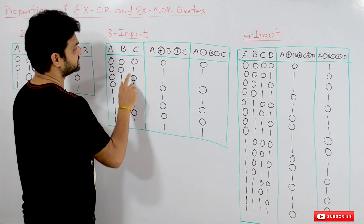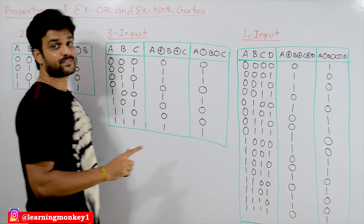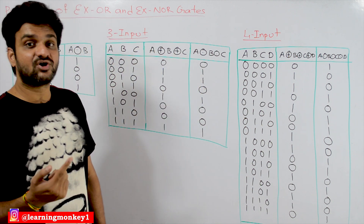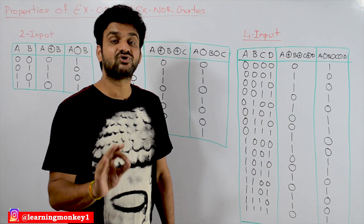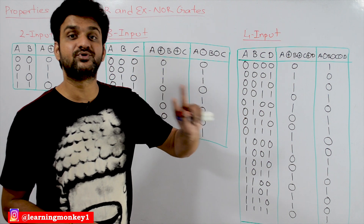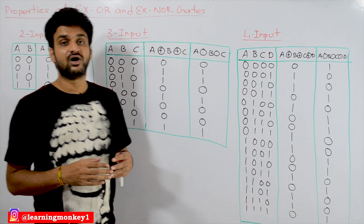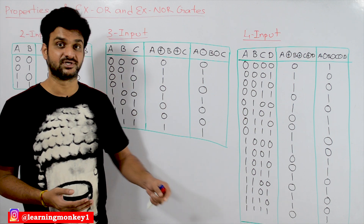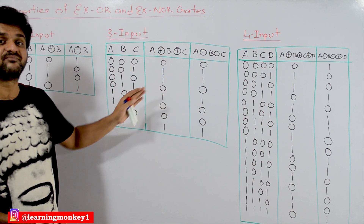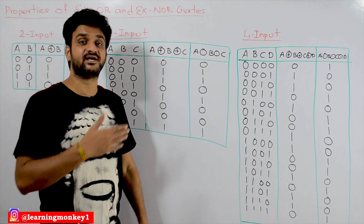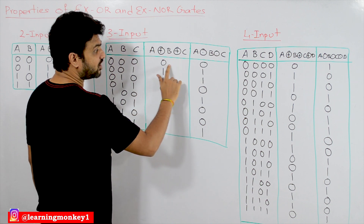For three-input combinations, if we look at the outputs, the output of XOR and the output of XNOR are the same. This is why standard XOR and XNOR gates are defined as only two-input gates — there is no standard XOR or XNOR gate with three inputs or four inputs, because for some inputs the outputs become opposite and for others they are complements. For three-input XOR and XNOR gates, the outputs generated are the same.